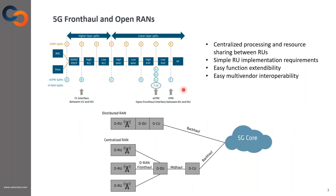The O-RAN Alliance has defined the Split Option 7 of base station functionalities. This split option offers multiple advantages, some of which are listed on the right.